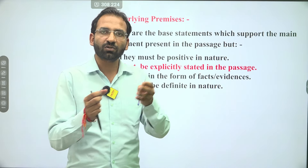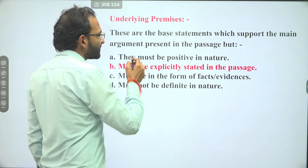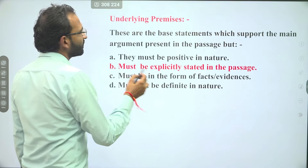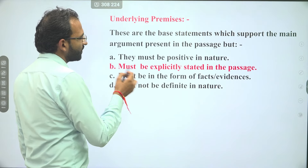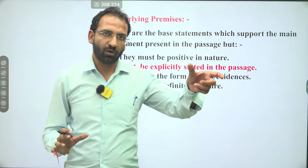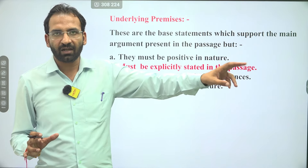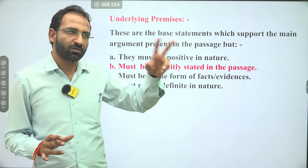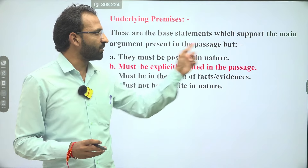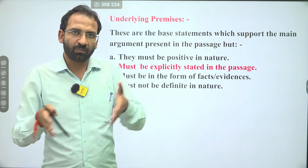The difference is: assumptions must not be explicitly stated in the passage, but premises must be explicitly stated in the passage. Premises are present in the passage and support the main argument to reach the conclusion. Assumptions are also facts and evidences but not explicitly stated in the passage — lekin relate karta hai hamesha main argument se. So: argument plus assumption is also a conclusion, and argument plus premises is also a conclusion.